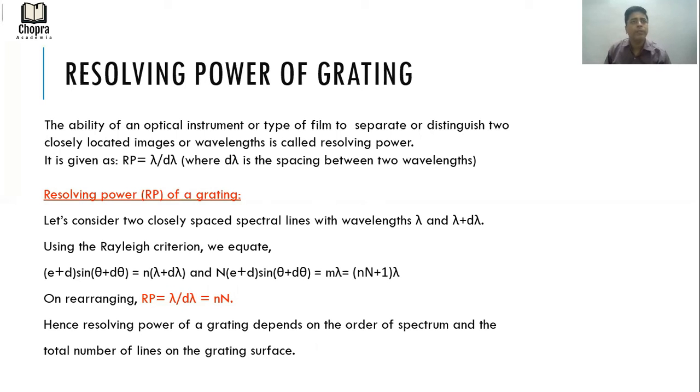We already derived the N slit diffraction case, so we can write down these equations as (E+D)sin(θ+Dθ) = N(λ+Dλ) and N times (E+D)sin(θ+Dθ) = Mλ. We learned that M will have values N+1λ. So we equate these two conditions, which are the principal maxima and secondary minima conditions. We equate these two equations and we find what is λ by Dλ.